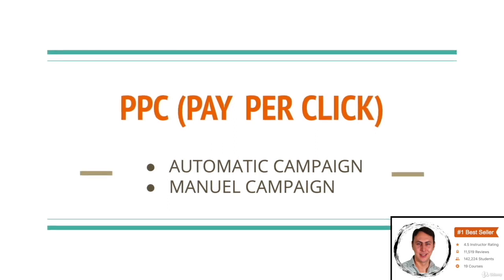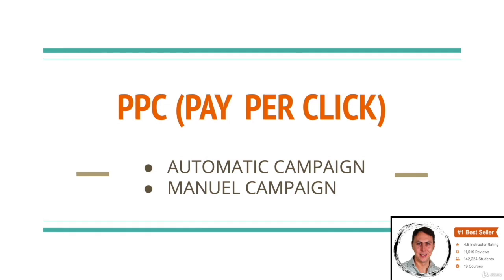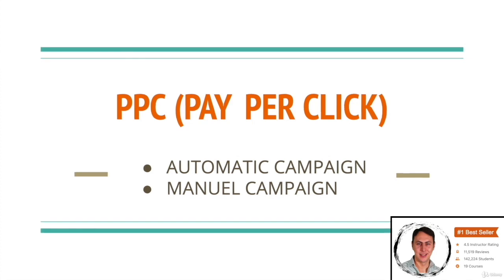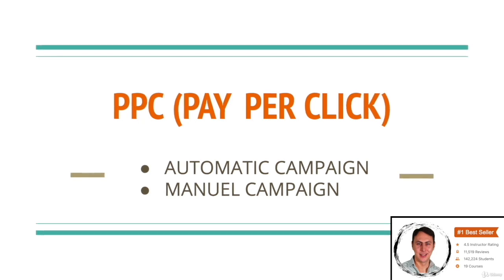You can determine manual campaign keywords using the data gathered from your automatic campaign, or by using keyword tools such as Helium 10. Our main purpose in using PPC is to discover all the keywords related to our product. We don't fully know keyword volumes or all keywords — there are programs like Helium 10, but the main information comes from Amazon. PPC advertising is how we learn from Amazon which keywords perform best and are most relevant to our product.